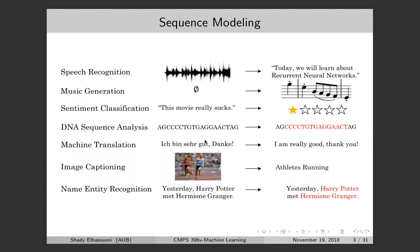Sentiment classification is a sequence modeling problem as well — we estimate the sentiment of a tweet. The input is a sequence of words and the output is typically a class like positive, negative, or neutral, or a real value such as a star rating from one to five. DNA sequence analysis is another example where the input and output are both sequences — for example, finding patterns in the DNA sequence.